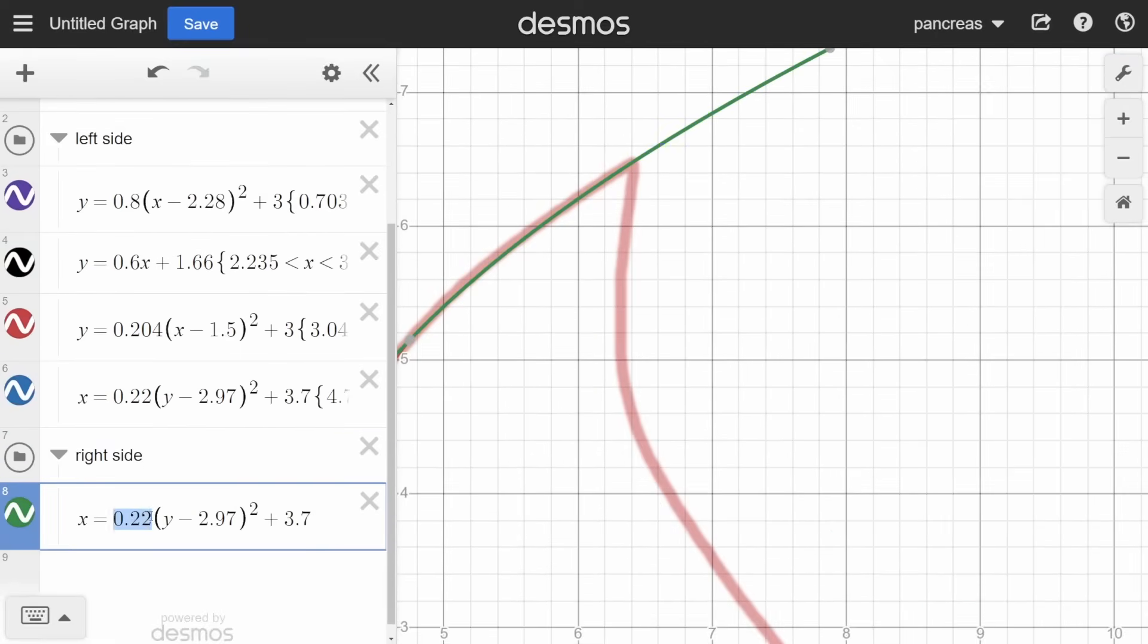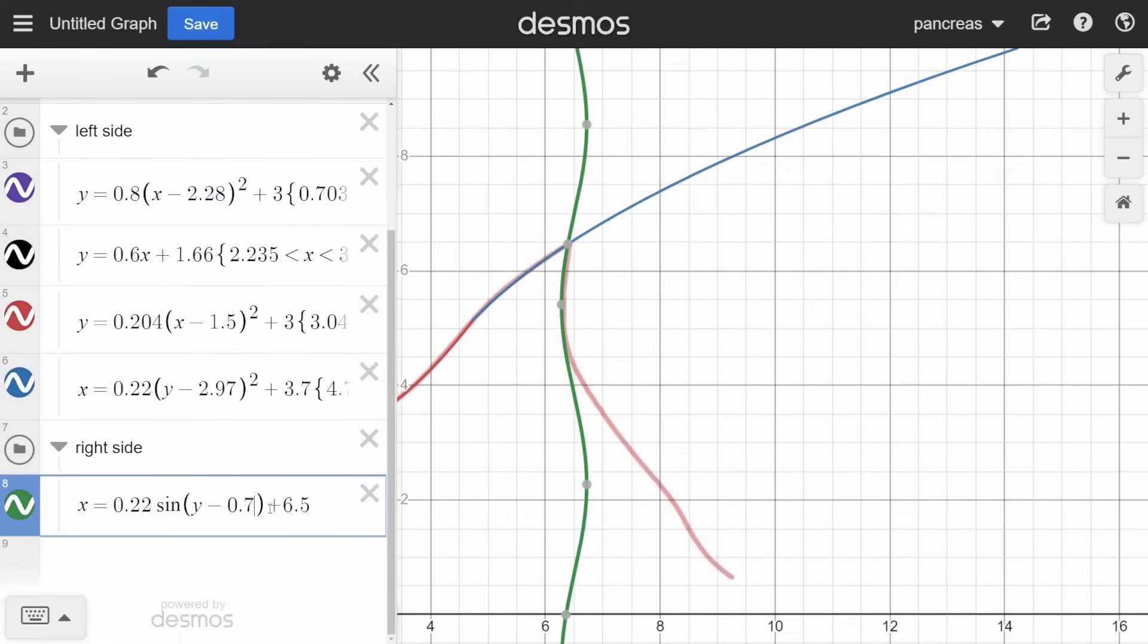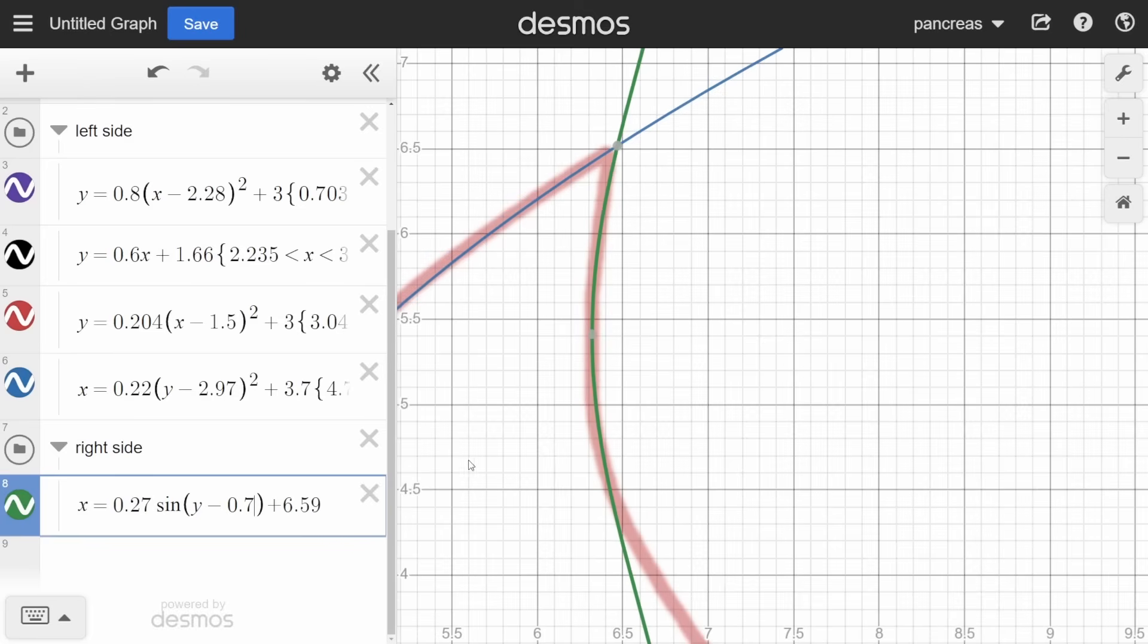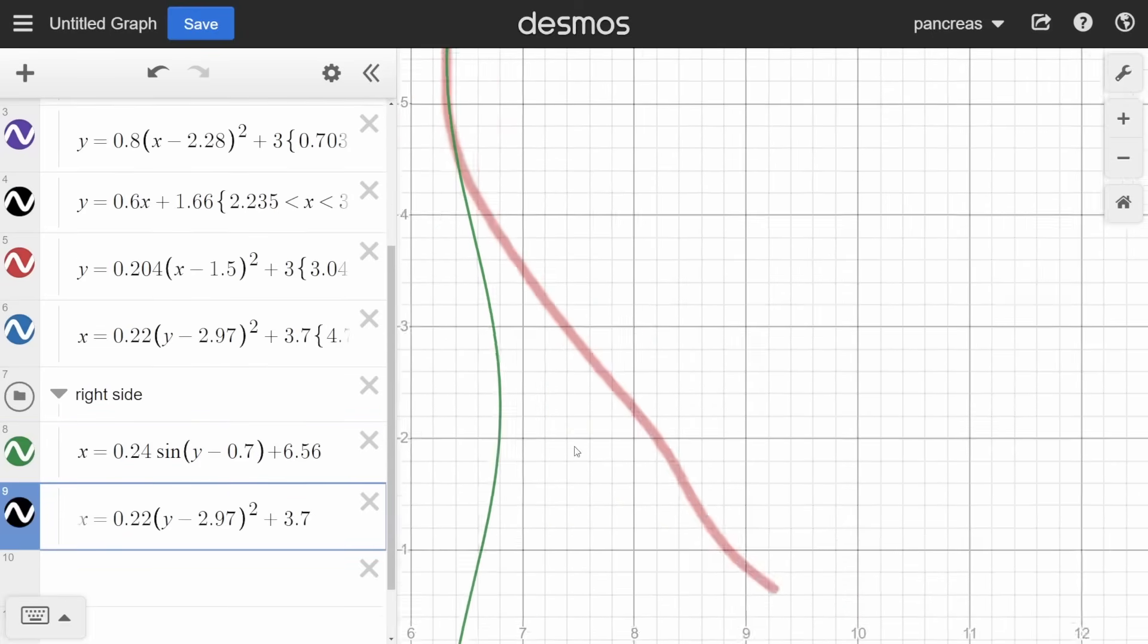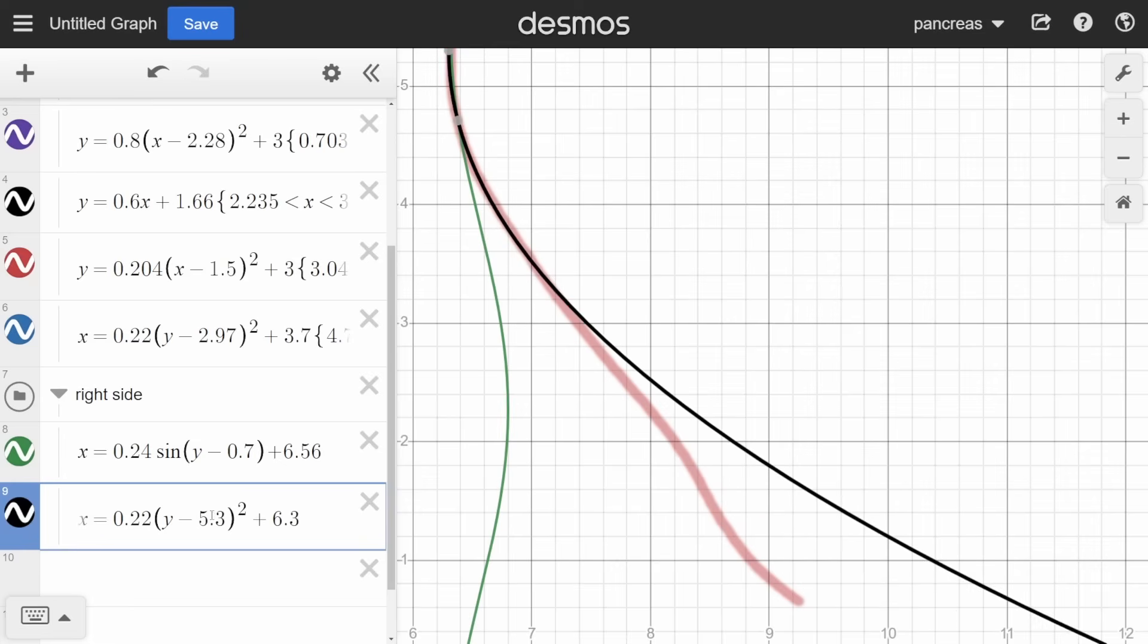Moving on to the right side, create a sideways sinusoidal function, two more sideways quadratic functions, and a quadratic function to end it off. There is quite a bit of guesswork included in this process, but tracing gets a lot easier with just a little bit of practice.